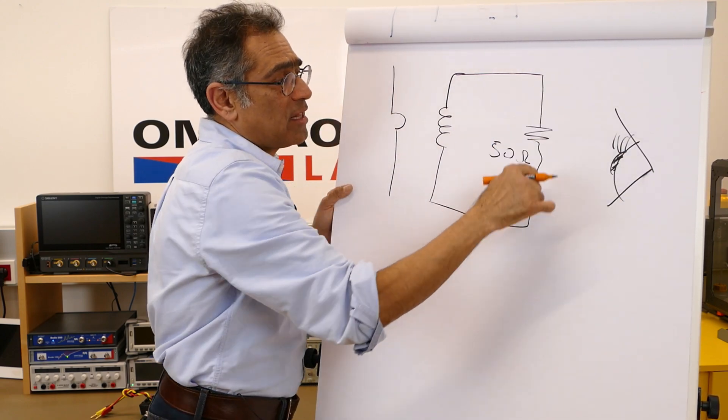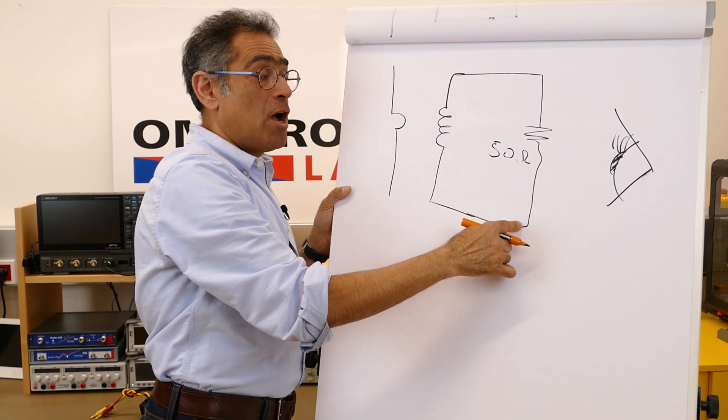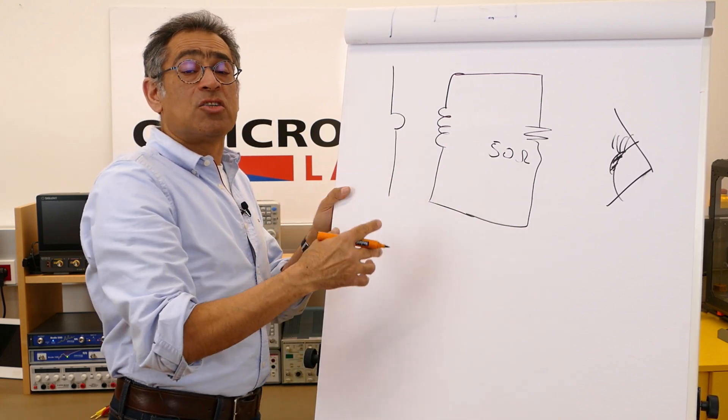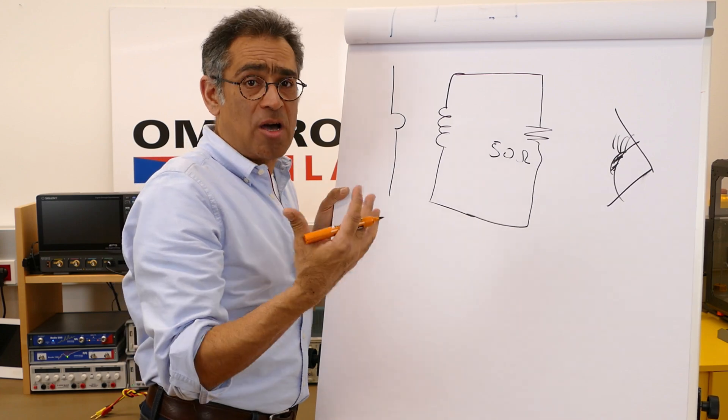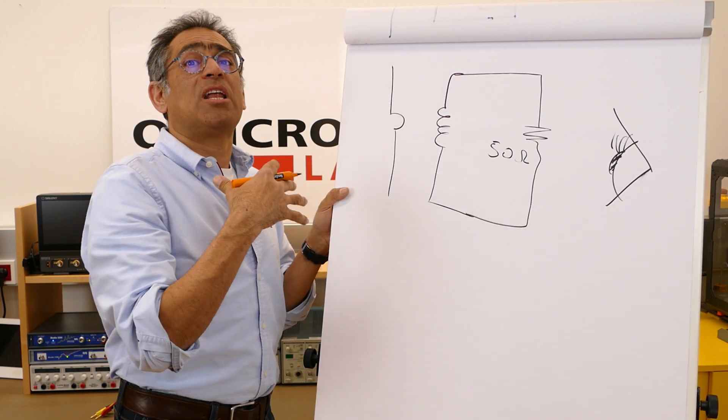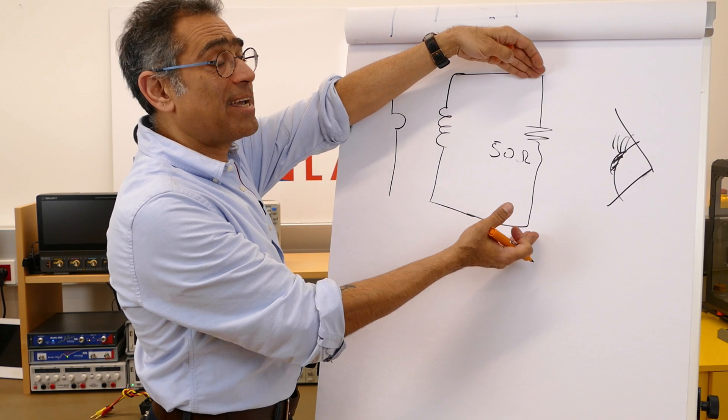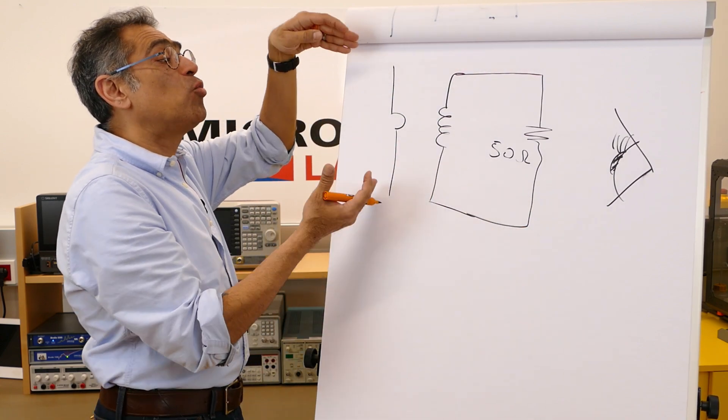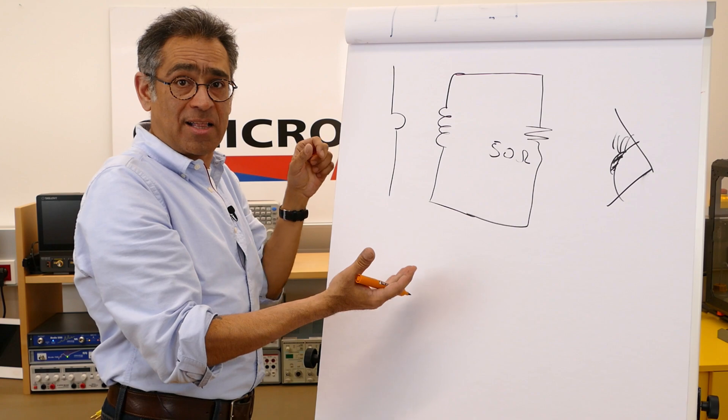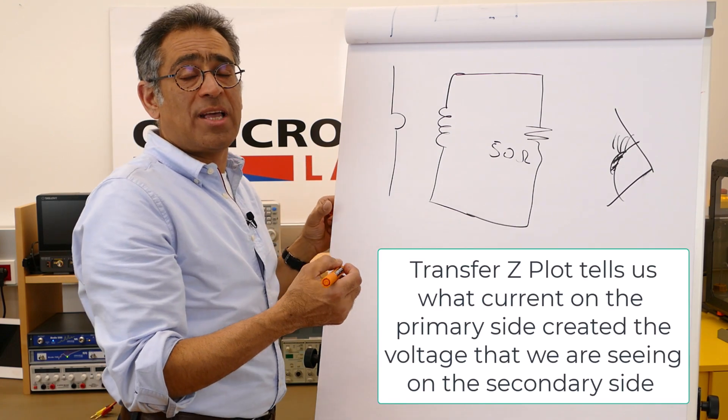But we are interested in the current on the primary, so effectively you need some kind of a translation table or some kind of a plot that takes the voltage on the secondary side and translates it into what was it on the primary side that created it, and that is called the transfer impedance.